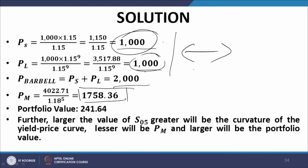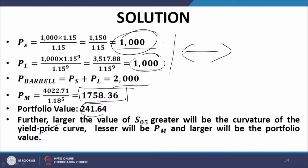Further, the larger the value of S05, the greater will be the curvature of the spot yield curve, the lesser will be Pm, and the larger will be the portfolio value. So if the 18 percent figure assumed for S05 were instead 24 percent, this figure would increase further. That is how the butterfly strategy operates — with a long position in the barbell and a short position in the body or bullet.